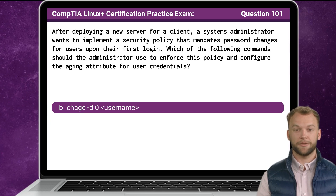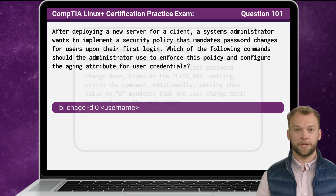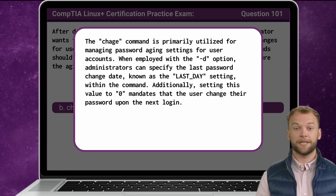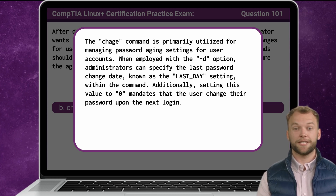The answer is B: chage -d 0, followed by the username. The chage command is primarily utilized for managing password aging settings for user accounts. When employed with the -d option, administrators can specify the last password change date, known as the last day setting, within the command. Additionally, setting this value to zero mandates that the user change their password upon the next login.